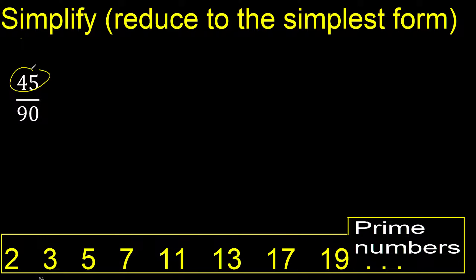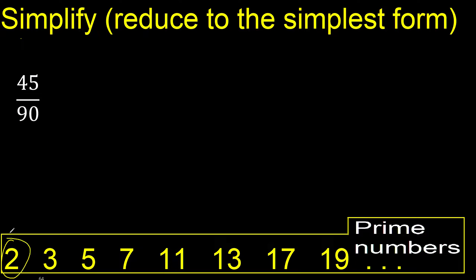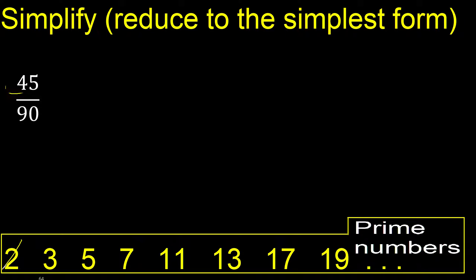45 and 90 cannot be divided by 2, because the last digit is not even, therefore not.